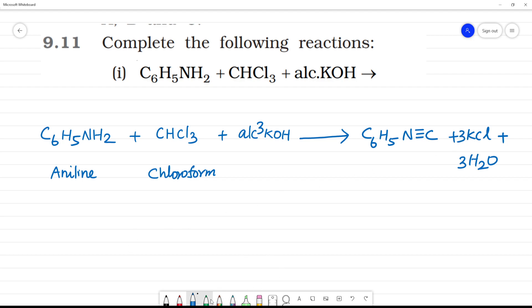So, what is the name of this? This is phenyl. C6H5 is phenyl. Phenyl isocyanide. This is important. This is also known as carbylamine reaction.